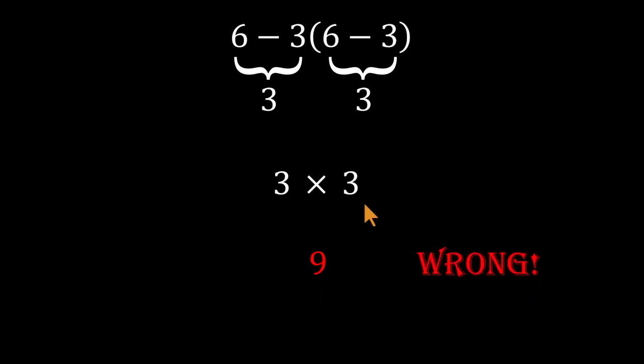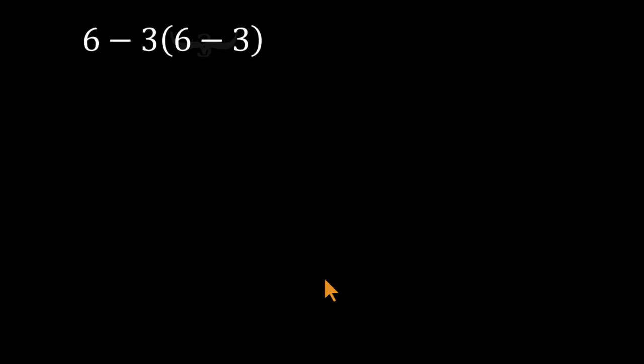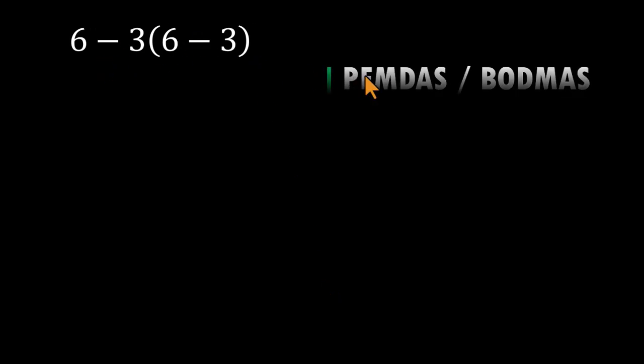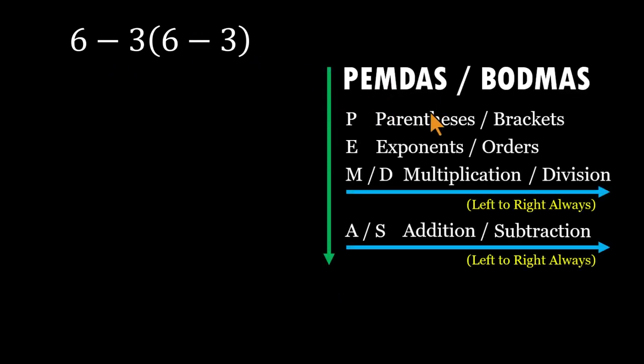The issue isn't the arithmetic. It's the order. Let's slow down and look at what order of operations tells us. Start with the parentheses. Inside the brackets, six minus three equals three.